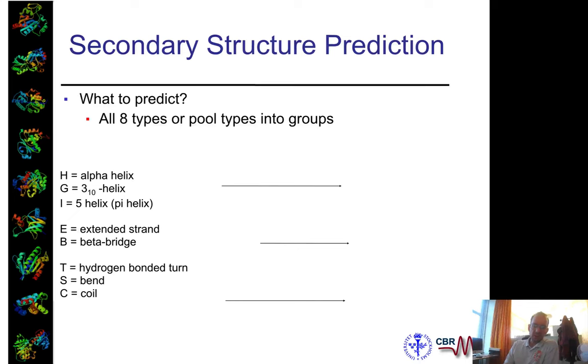So in DSSP, you have eight different classes of secondary structures. You have three types of helices, two separate strands, and three types of coils. But normally you define it as only three groups: helix, sheets, and loops or coils. Because actually this prediction of eight classes is very difficult and probably useful, but it might not be the exact best definition.